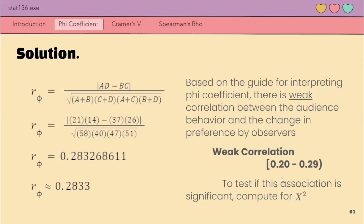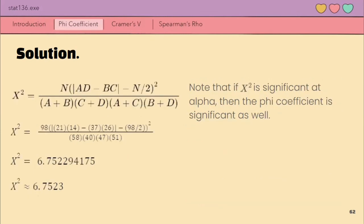Ngayon, let's move on to testing whether this association is significant by computing for x squared. Again, using the formula incorporating correction for continuity, we will plug in the values. So, plug in lang natin this from the table. And then, this is approximately 6.7523.